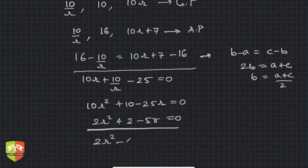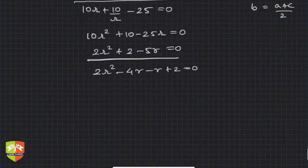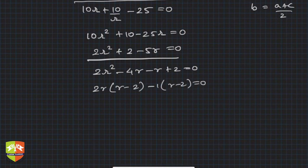Now solve this quadratic: 2r² - 5r can be written as -4r - r + 2 = 0. So this is 2r(r - 2) - 1(r - 2) = 0. So (r - 2)(2r - 1) = 0. That means r equals 2 or r equals 1/2.